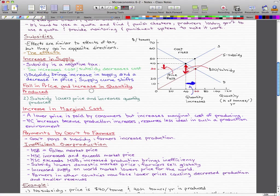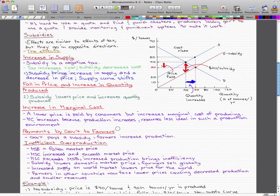Subsidies increase the marginal cost. A lower price is paid by the consumers, but there is an increase in marginal cost of producing because the production increases. The resources are less ideal in such production environment because subsidies make it so that the farmers are making more than normal. And perhaps in some situations, the equipment that they have aren't really adequate to produce at the amount that they are producing, which is more than normal because their production is being subsidized.